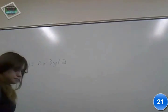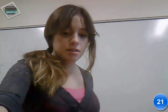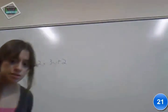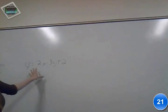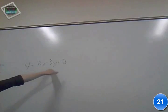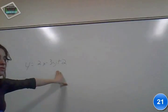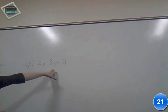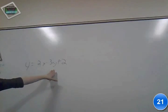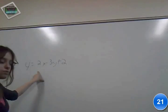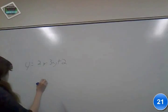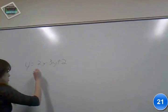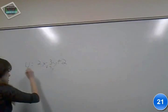So here we have our equation. Let me make sure that you can see that. Okay. So we have y equals 2x minus 3y plus 2. It's helpful if you just isolate the y variable so it's on its own. So you're going to add 3y to both sides of the equation.